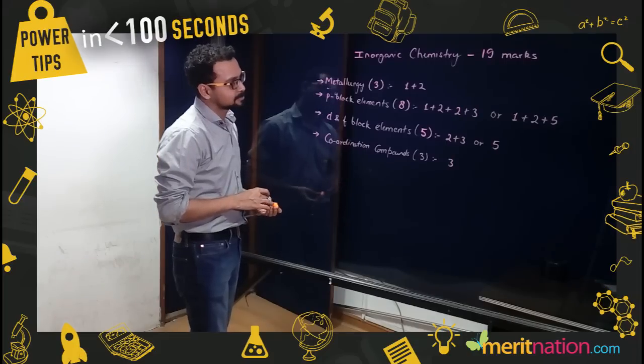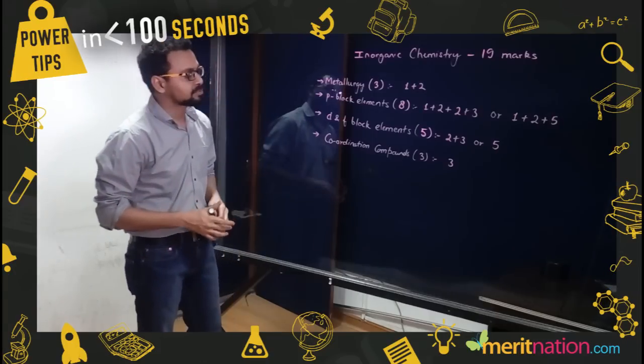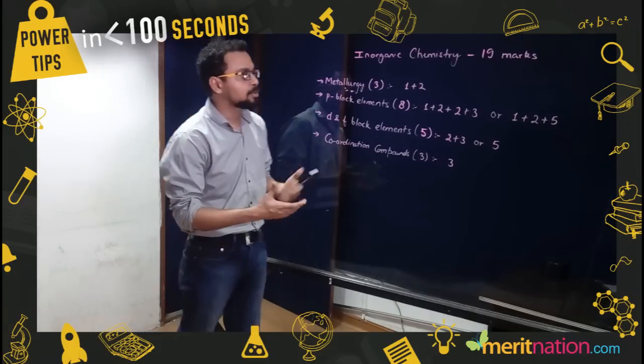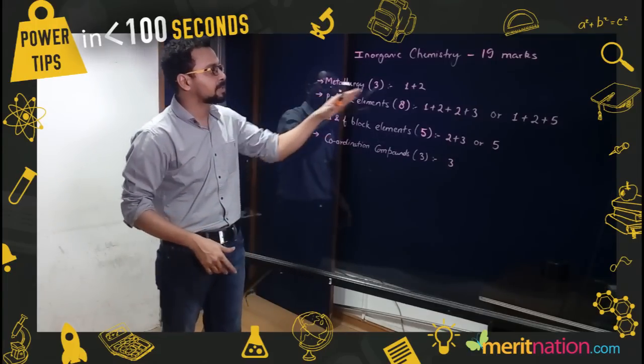So what are the important topics from inorganic chemistry? Let's try and understand the marks distribution. In this particular topic you can see metallurgy is basically getting a 1+2 distribution, that is a total 3 marks distribution.